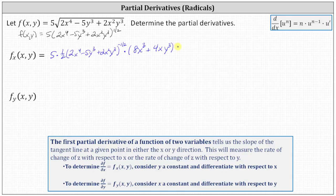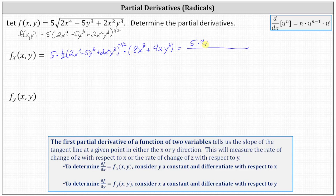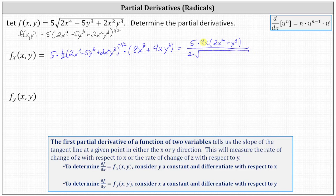Now let's begin to simplify. Let's write this in fraction form. In the numerator, we have a factor of 5. We'll move this quantity to the denominator, which will change the sign of the exponent to positive 1/2, which we'll then write as a square root. We also have 8x cubed plus 4xy cubed in the numerator. Let's factor this — the greatest common factor is 4x, giving us 4x times the quantity 2x squared plus y cubed. In the denominator, we have a factor of 2 from the 1/2, and moving this quantity to the denominator, the exponent changes to positive 1/2, which is equivalent to the square root of the quantity 2x to the fourth minus 5y cubed plus 2x squared y cubed.